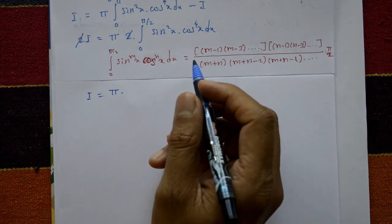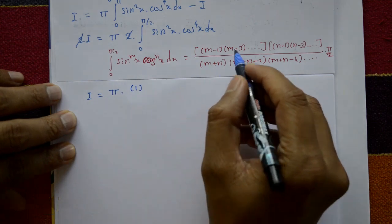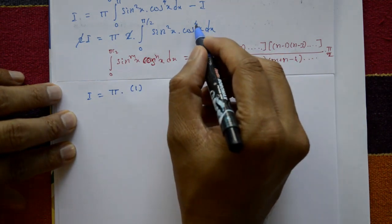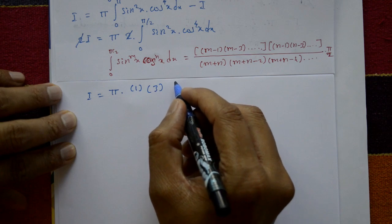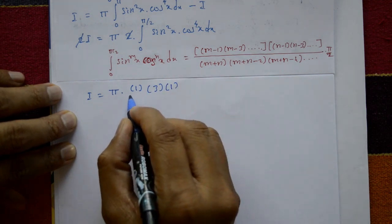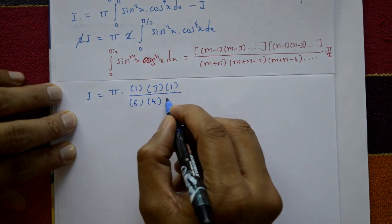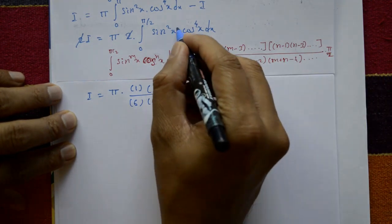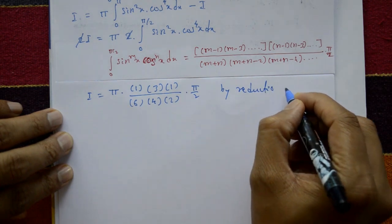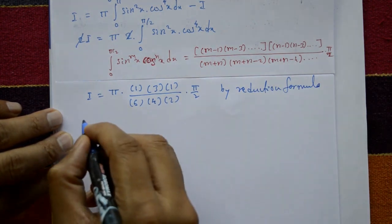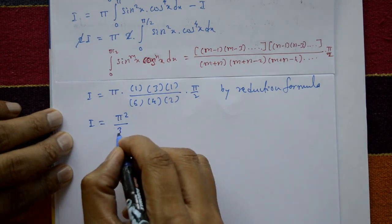Here m = 2 and n = 4. Applying the formula: numerator is (2−1)·(4−1)(4−3) = 1·3·1 = 3; denominator is (2+4)(2+4−2)(2+4−4) = 6·4·2 = 48, times π/2, times π. Both m and n are even, so I = π · (3/48) · (π/2) = π²/32. This is the required answer.